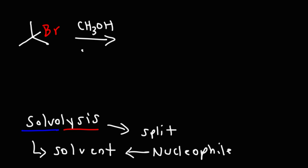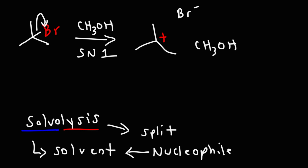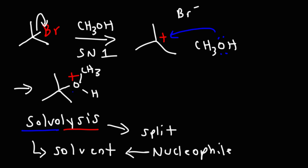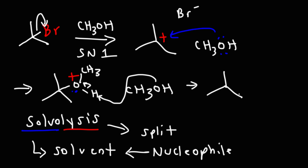Solvolysis reactions are typically associated with SN1 reactions. The leaving group is going to leave, and we're going to get a tertiary carbocation. Once we get this carbocation, the solvent is going to behave as a nucleophile and react with the carbocation. We get this intermediate. Whenever oxygen has a positive charge, any hydrogen atoms attached to it will be very acidic. So in the third step, a methanol molecule grabs the proton, and our end result is an ether. That's an example of a solvolysis reaction — the solvent behaves as the nucleophile.